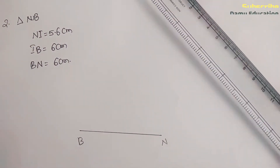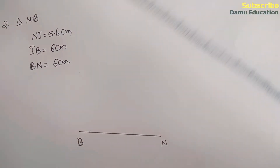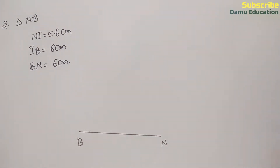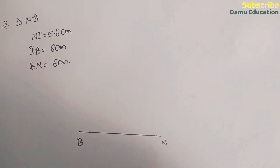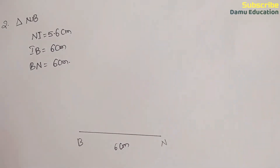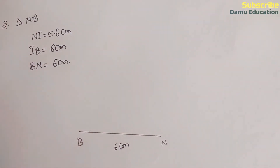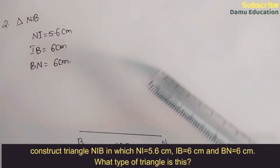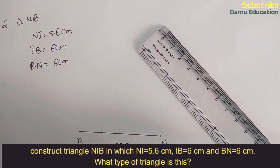Make sure BN is drawn — that is 6 centimeters. BN will be equal to 6 centimeters. Next, what we need to draw again is BN. We are drawing, so let's draw line segment NI.